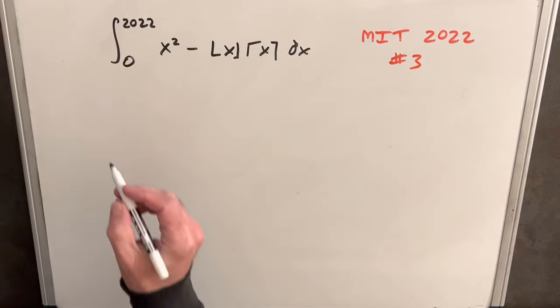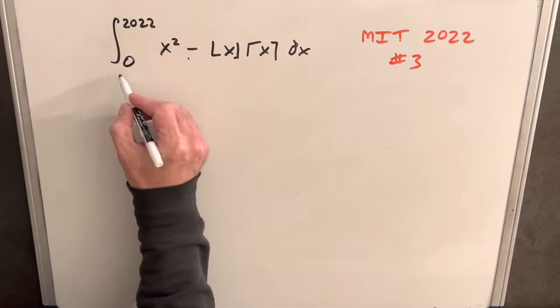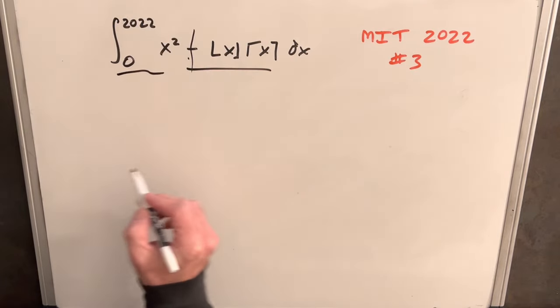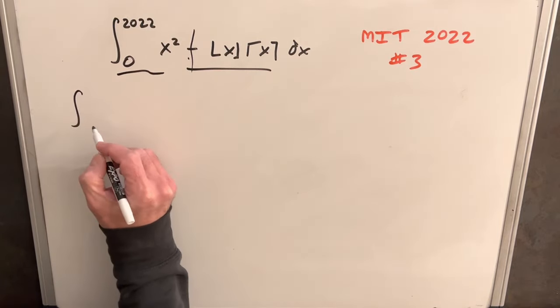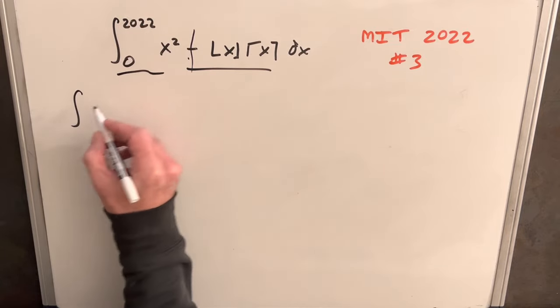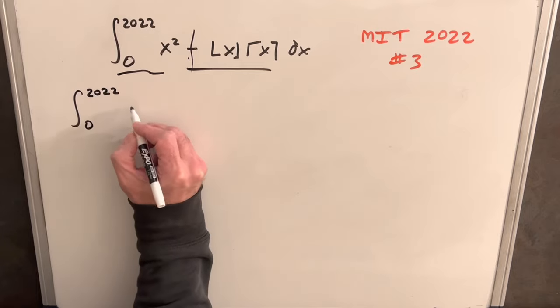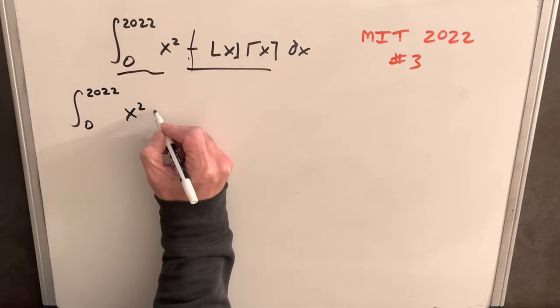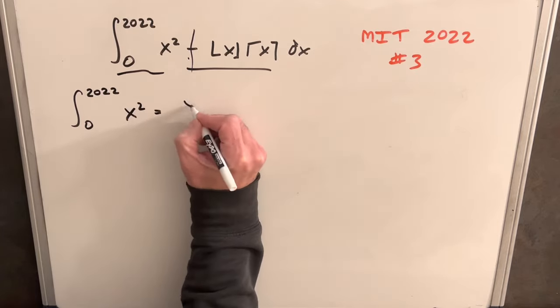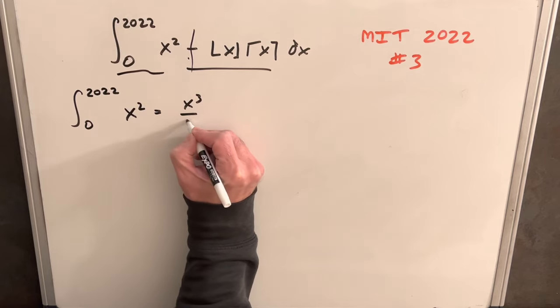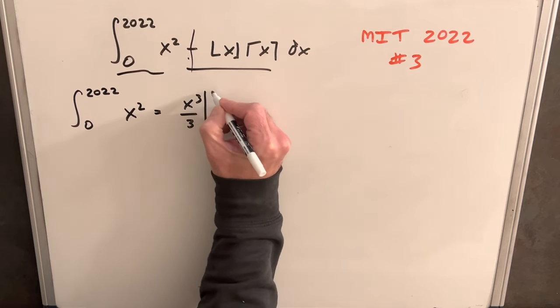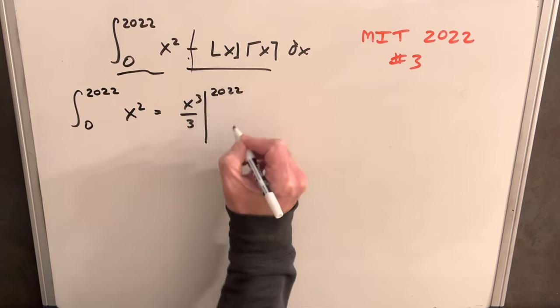To start, I want to break this into two integrals. We have a minus sign here, so we can split this. For our first integral, I'm actually going to do this separately because this one's going to be easy, so we'll just get this out of the way.